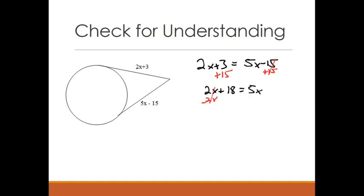Then I'm going to subtract 2X from each side of this equation and get that 18 equals 3X. Last thing, I'm going to divide by 3 on both sides and get that X equals 6.